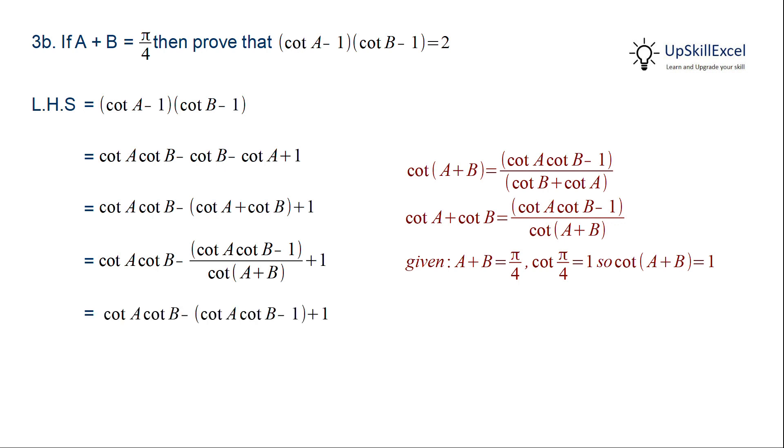Substituting this, we get that the denominator gets eliminated and we are left with cot A cot B with a positive and negative sign, so they cancel out, giving us the result as 2, which is equal to RHS.